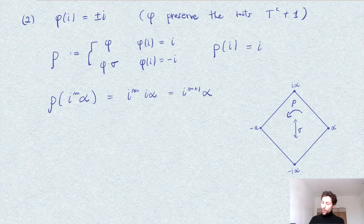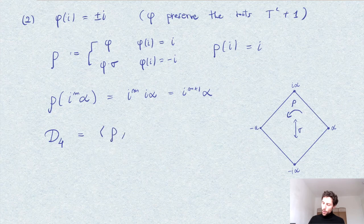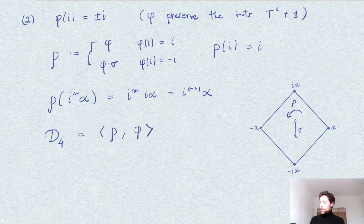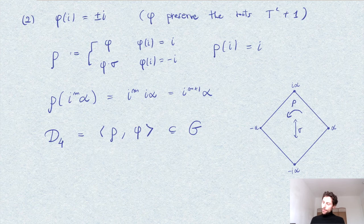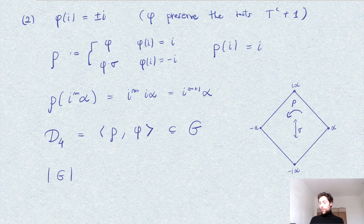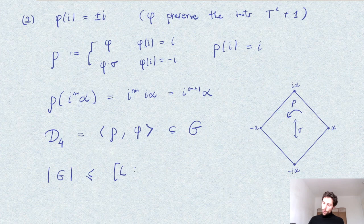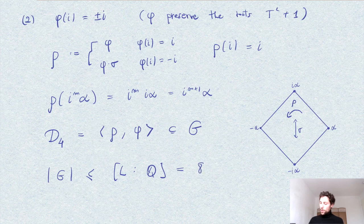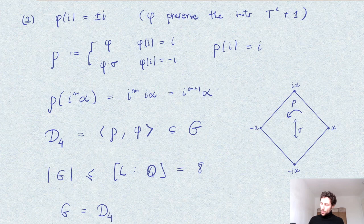It permutes the roots of f and also the dihedral group D4 is generated by these two elements, rho and phi. So this group has to be at least contained in our Galois group G. On the other hand, this group D4 has order 8. And we know that in general the order of the Galois group of such an extension, which is the splitting field of a polynomial, is bounded by the degree of the extension, which as we mentioned it is quick to show that it is 8. So by these two equalities, it clearly follows that G is precisely equal to this dihedral group D4.